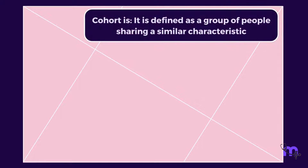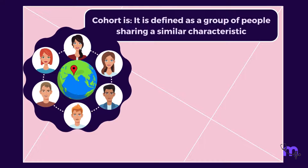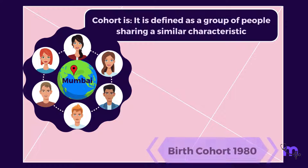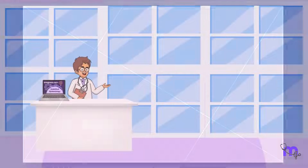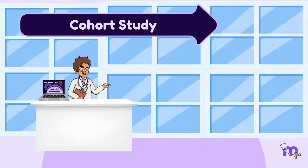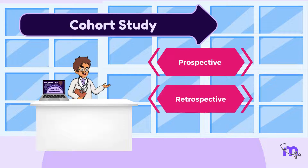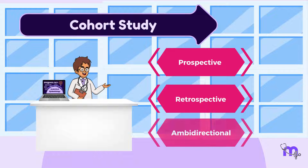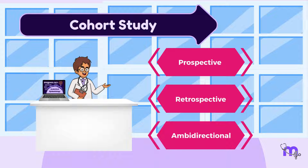A cohort is defined as a group of people sharing a similar characteristic. For example, a cohort of people born in Mumbai in the year 1980 will be called a birth cohort. Based on the direction of the study, I can subdivide the cohort study into prospective, retrospective, and ambidirectional cohorts.